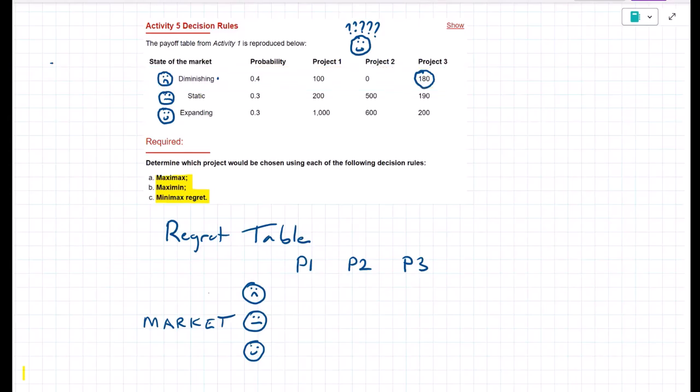Next, we compare the profits that we would earn for the other projects against the best option for each market state. So if the market turns out to be diminishing, the best choice I could make would be project three. If I choose project three and the market turns out to be diminishing, I have no loss. Best option.